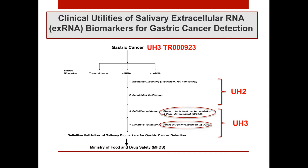Our major aim was to develop salivary extracellular RNA biomarkers for gastric cancer detection. The project comprised several major steps: biomarker discovery on 200 samples (100 gastric cancer and 100 controls), followed by stepwise verification and definitive validation. In the first phase we did individual marker validation with panel development in a large cohort of 500 gastric cancer and 500 control patients, then another validation of the panel in 250 gastric cancer patients and 250 controls. Our ultimate aim was to pursue FDA approval, highlighting not only discovery but mainly definitive validation and prospective design.